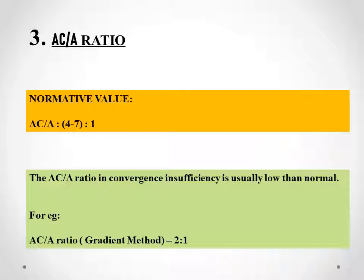The third test is the AC/A ratio. You can use either the heterophoric method or gradient method to calculate this value. Since the PBCT has already been performed, we already have the exodeviation measurements for both distance and near, and we can also measure the IPD of the patient, so the heterophoric method can definitely be used. According to my experience, gradient method takes much less time. In convergence insufficiency, the AC/A ratio is always less than the normal value of 4 to 7:1. In this example calculated with the gradient method, the value came to 2:1, indicating convergence insufficiency.